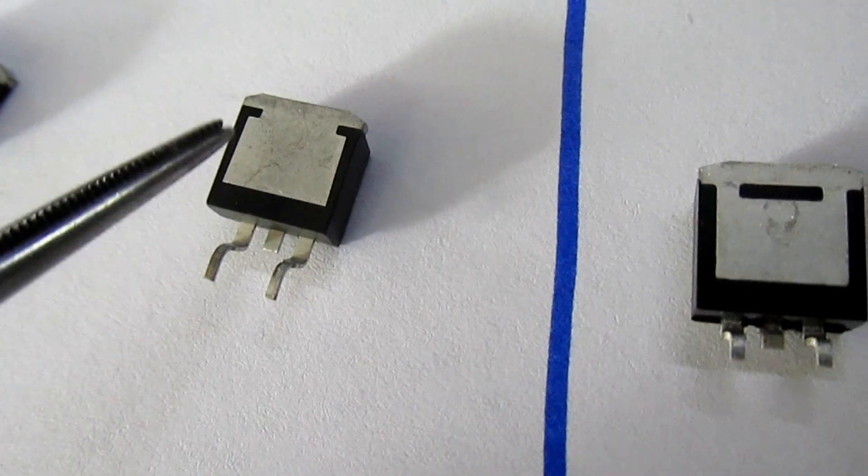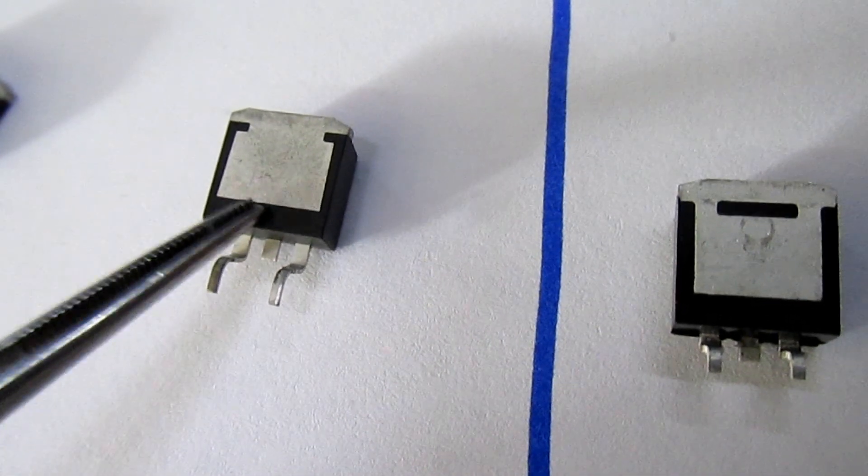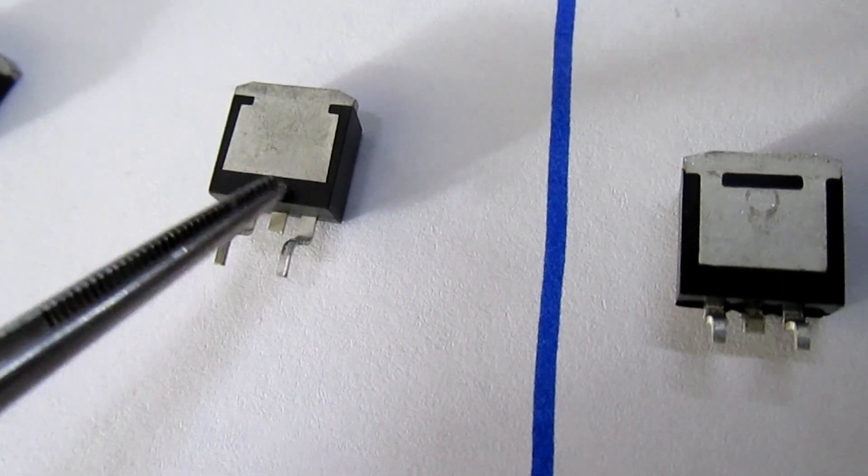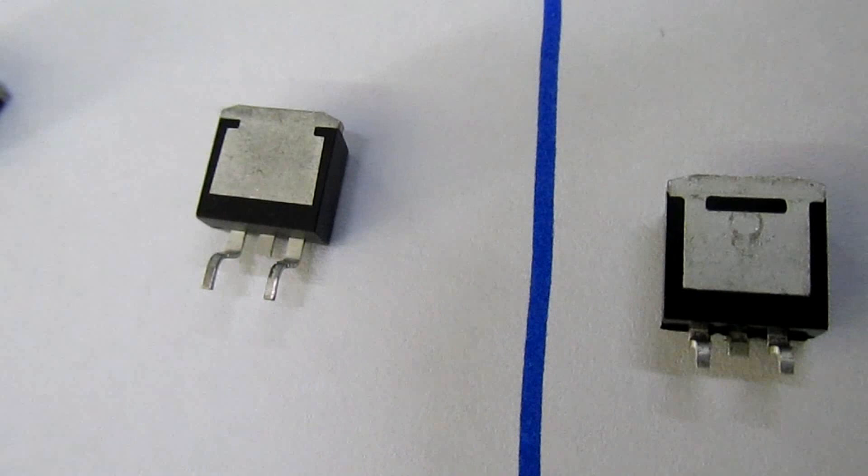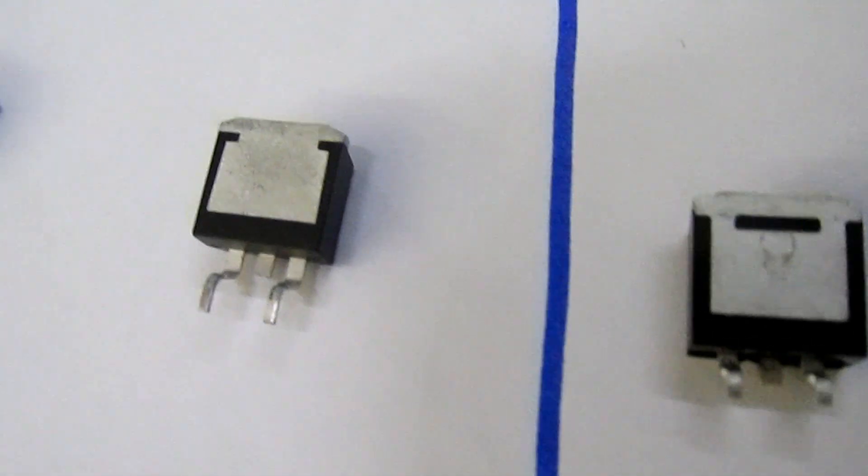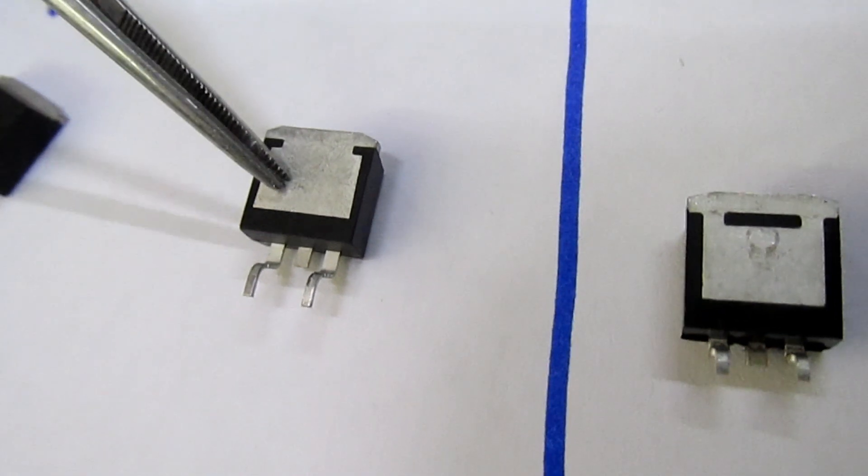Because these are more than likely out of spec rejects, you could get absolutely anything. You could get a device rated at 50 volts, you could get a device rated at 1000 volts. The only time you'll know you've got a fake is when you fit this in your TV board and it either blows up and takes another load of parts with it.